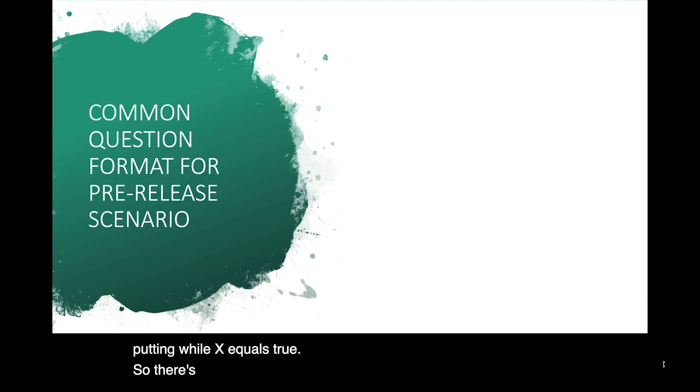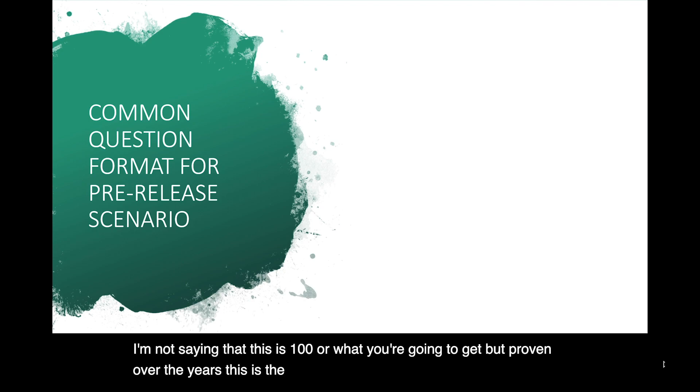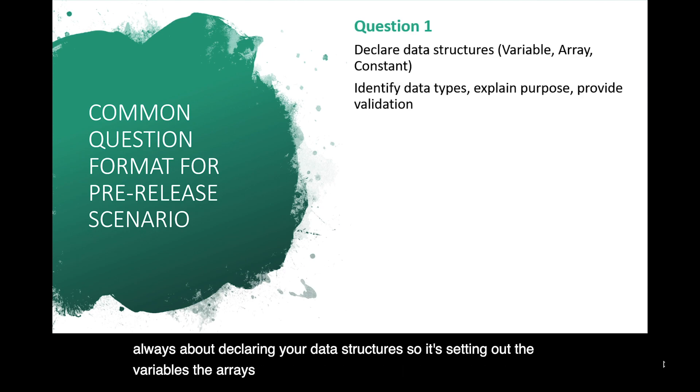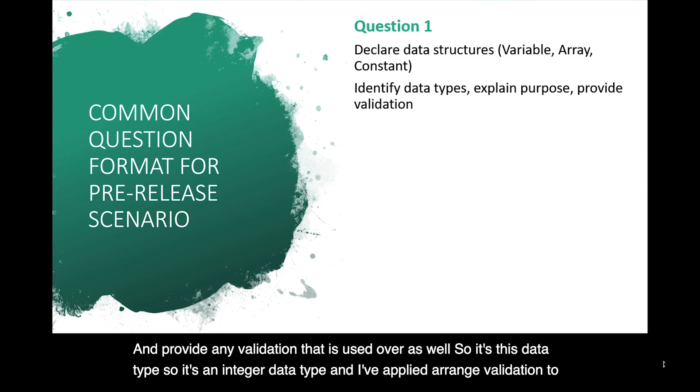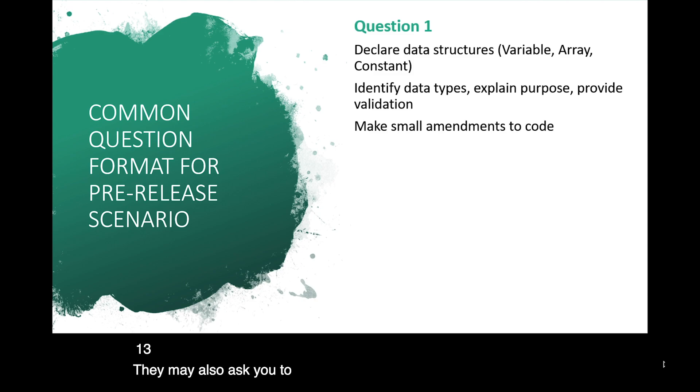So there's a common question format for the pre-release scenario. Now I'm not saying that this is 100% what you're going to get, but proven over the years, this is the most likely question order and type of question that you're going to get. So question one is pretty much always about declaring your data structures. So it's setting out the variables, the arrays, the constants. Then they're going to ask you to identify the data types that are used for each of those, so you should be able to explain the purpose of each variable and provide any validation that is used with it as well. So it's this data type, so it's an integer data type, and I've applied a range validation to ensure that the input is not less than zero and is less than 13. They may also ask you to make some small amendments to the code or do a small explanation of the code as it's working.